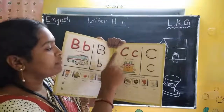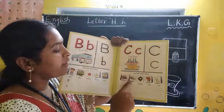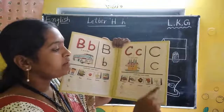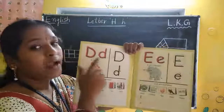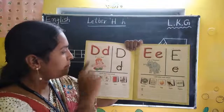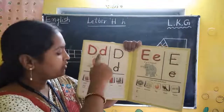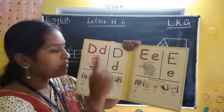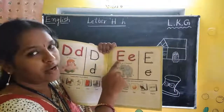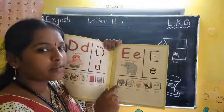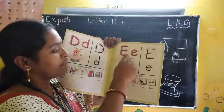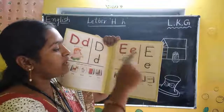Capital C. C for cat, C for cab, C for cow. Capital D and small D. D for doll, D for drum, D for dog, D for duck, D for door, D for desk. Capital E and small E. E for elephant, E for earth, E for envelope, E for egg, E for eagle, E for engine.